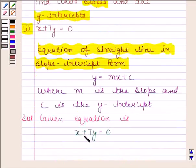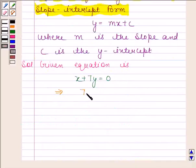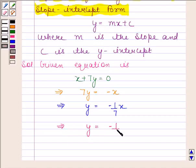Now, x plus 7y equals 0 implies 7y equals minus x. This implies y equals minus 1 by 7 into x plus 0.